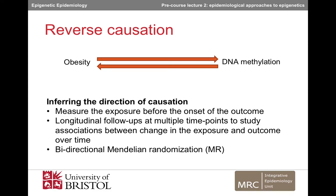If genetic data are available, another approach would be to carry out a bidirectional Mendelian randomisation analysis, to compare the relative strengths of the associations between genetic proxies for obesity and DNA methylation, and genetic proxies for DNA methylation and obesity. The rationale here is that whereas DNA methylation and obesity can be influenced by many factors, including each other, genetic variation is not related to the same factors and does not change over the life course. We will discuss causal inference techniques such as this in more detail on the main course.